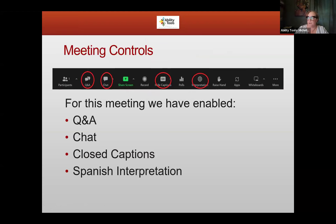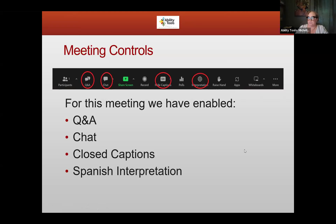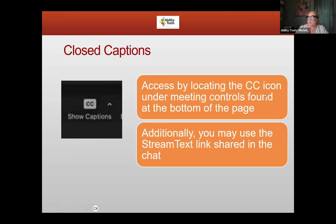We've enabled both the Q&A and the chat, as well as closed captioning and Spanish interpretation. Each of these menus are located at the bottom of your screen under the meeting controls. To access closed captions, go to the meeting controls at the bottom of your screen and select the CC icon. You'll have the ability to enable captions and move the text box wherever you like on your screen for more convenience.